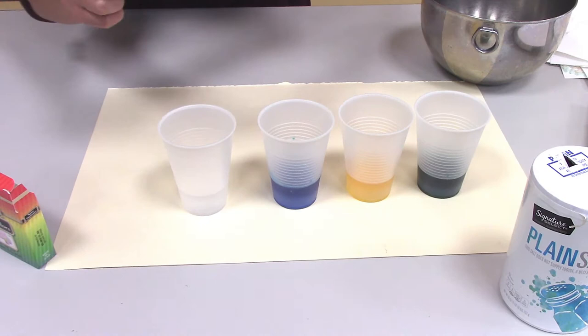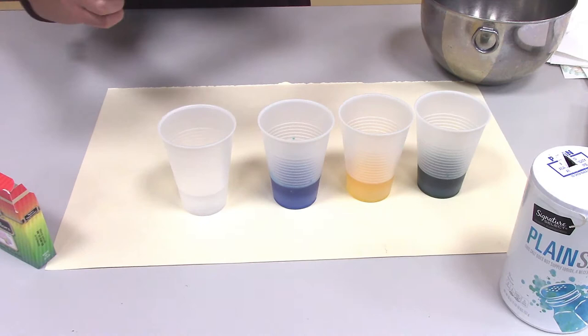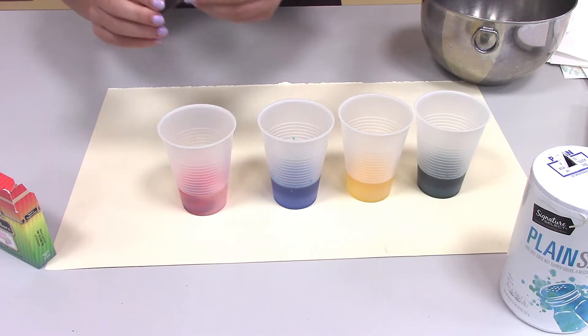So to make your paint color, you're just going to need about one, two, three drops, something to stir it with. And there you go. You have your own watercolor paint.